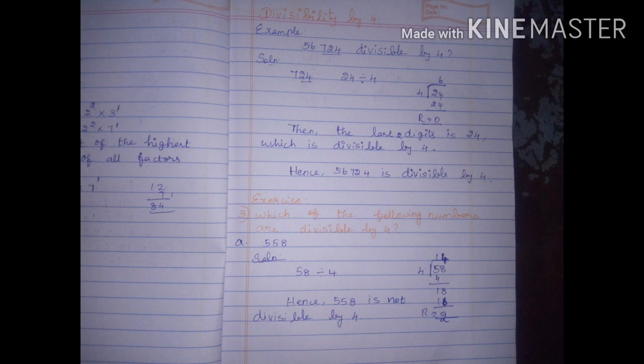Next, exercise sums. In the book, page number 104, third question: which of the following numbers are divisible by 4? First, take the number 558. Take the last two digits: 58. Solution: 58 divided by 4.